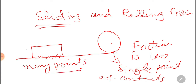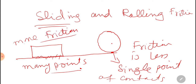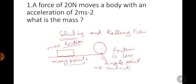In sliding friction, many points are in contact, so there is more friction. Therefore, sliding friction is greater than rolling friction, because in rolling friction there is a single point of contact and in sliding friction there are many points of contact.